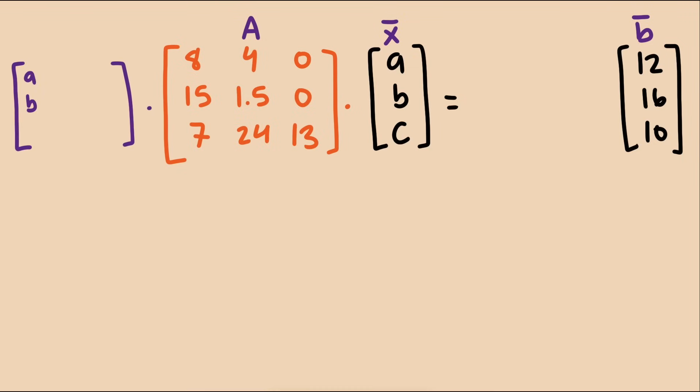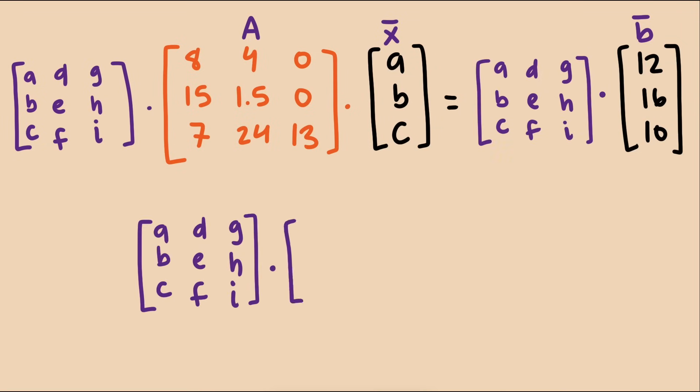To solve our equation, we should multiply both sides by a matrix that will produce the identity matrix on the left with the peanut butter, bread, and jam vector. So what matrix will turn A into the identity matrix? Well, we can use what we know to solve for that matrix.